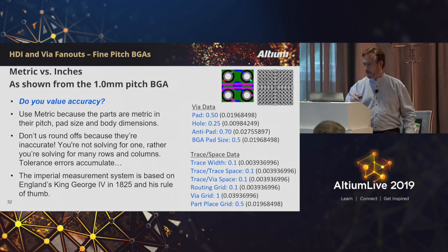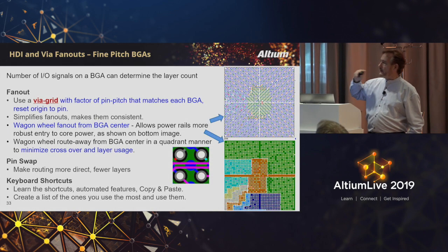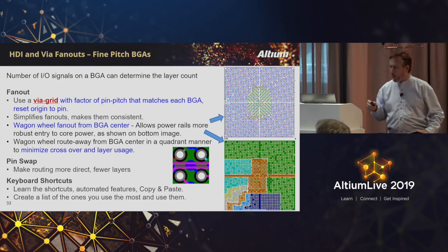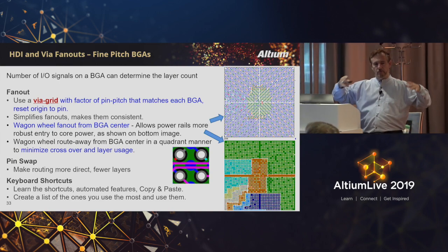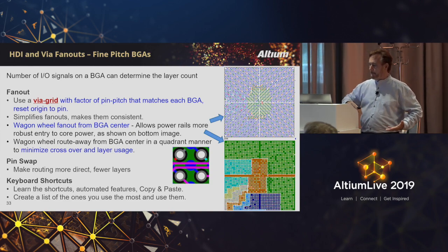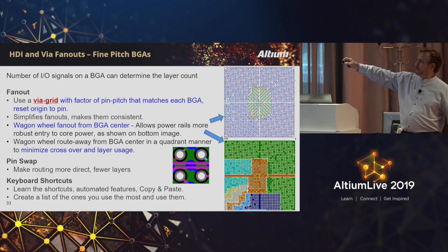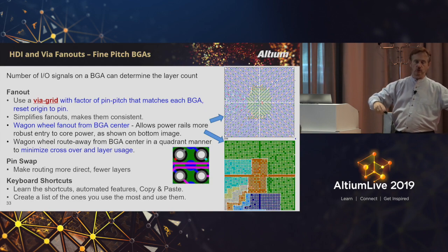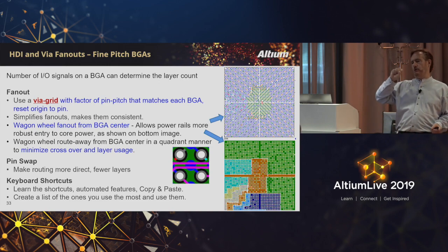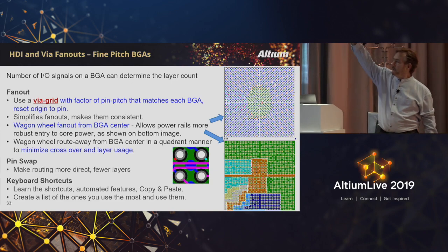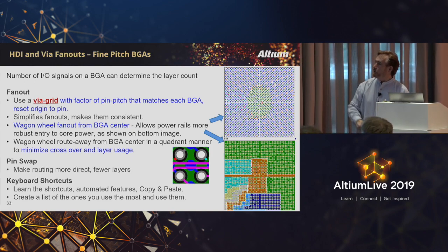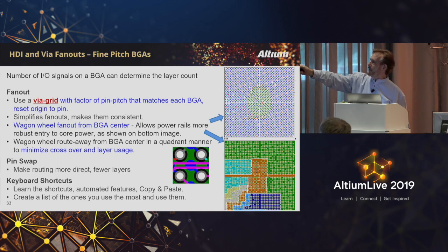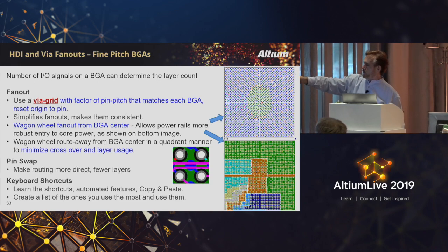That's my metric rant. This slide discusses stipulating how many signal layers you need, but we're still in the fan-out discussion - this is the pin escape of a surface mount board. Typically a quadrant fan-out is used, which Ben can demonstrate. I like quadrant fan-out because it creates a power channel down to the center to bring more robust copper into the middle. In this example I violated it - rather than having a robust copper strip I ended up with individual traces in the middle.